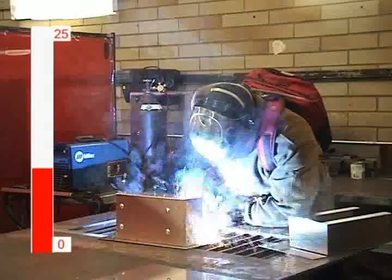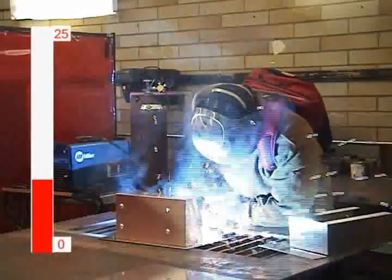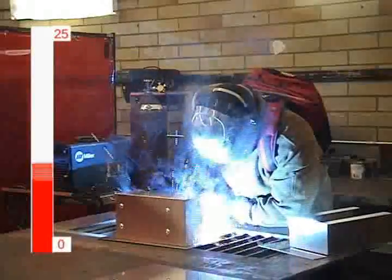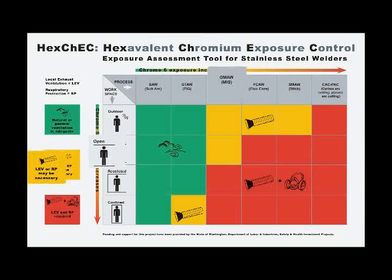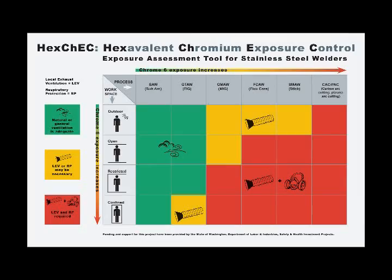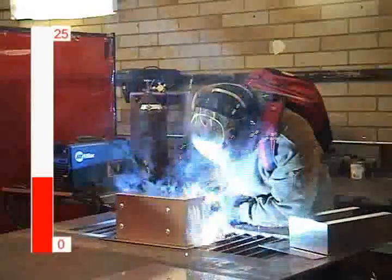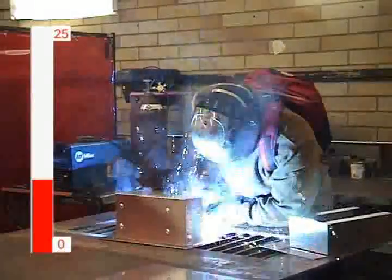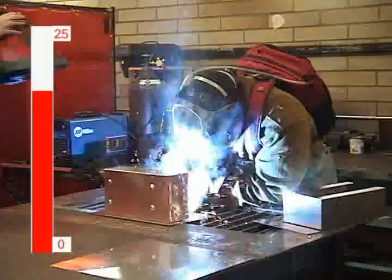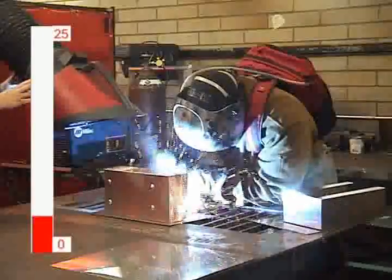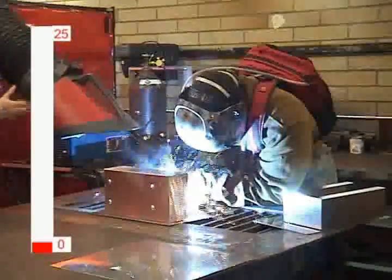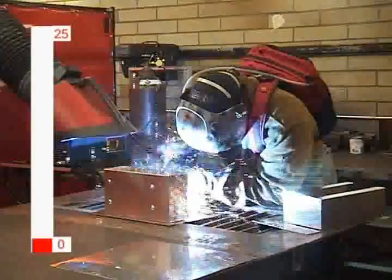In our second open space shop example, Justin MIG welds on stainless without using any LEV. MIG welding in an open space without LEV may be okay, but it depends on the natural and general ventilation of the space. According to the hazard assessment tool, LEV is recommended when MIG welding in a shop. If Justin were MIG welding in an area with restricted air flow or in a confined space, LEV would definitely be required. When we introduce a Lincoln Electric Mobiflex LEV hood to the side, his exposure to total welding fume is easily reduced to almost nothing.